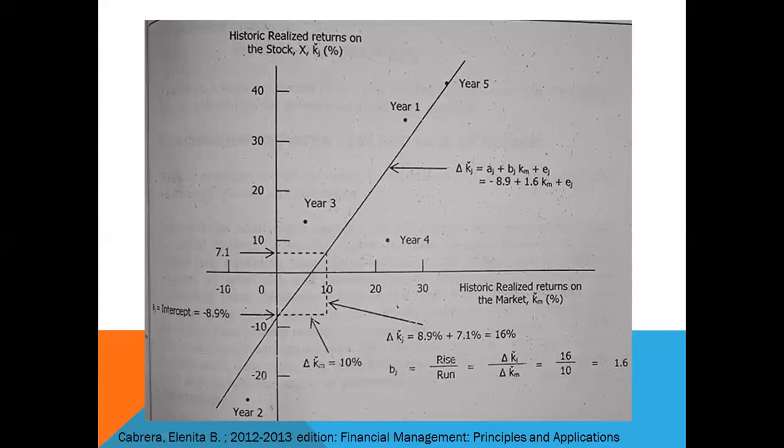However, the actual return would probably differ from the predicted return. This deviation is the error e for the year, and it varies randomly from year to year depending on company-specific factors.